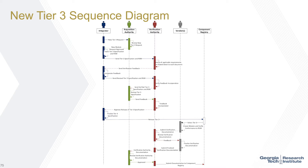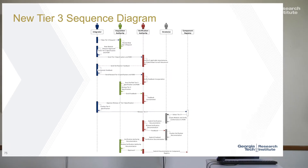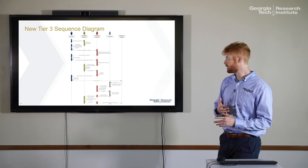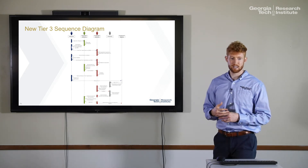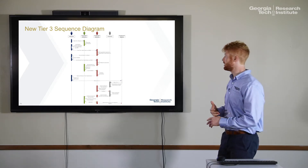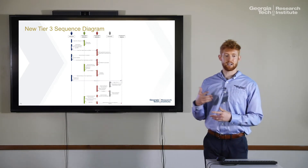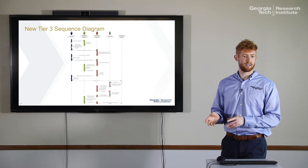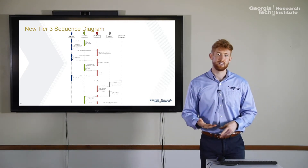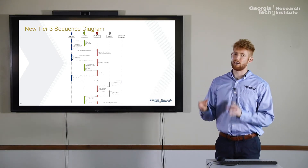That approved tier three goes into the component repository where vendors can see which tier threes are available and what they can build to. A vendor will pull out that tier three, build a module to it, or the integrator may notify vendors to start building modules to it. The vendor creates a module, verifies it meets the tier three, and submits documentation to the verification authority. After back and forth finalizing the documentation, the acquisition authority has final say, and then that component documentation is submitted to the registry. This also helps because you know that the components in the registry are actually being used on systems — which helps with reuse when you look through the repository.